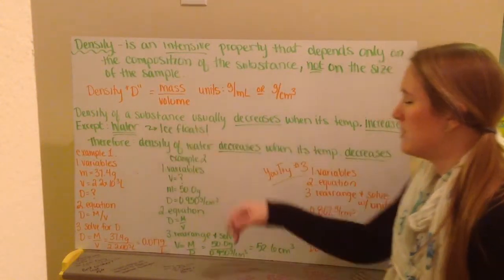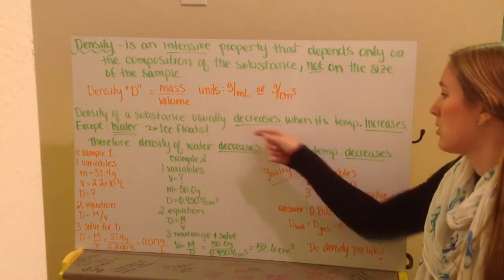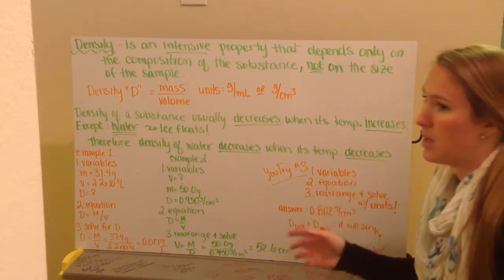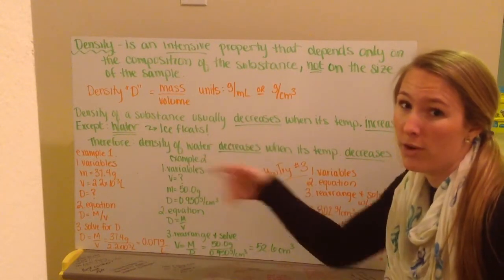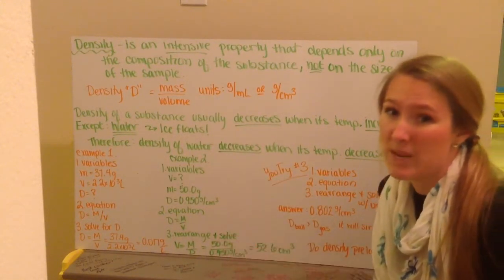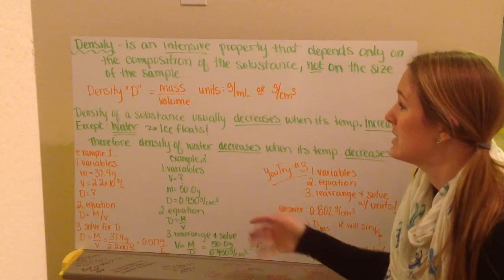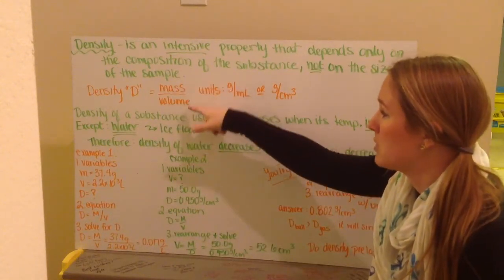The density of a substance is going to usually decrease when its temperature increases. So as something gets warmer, the molecules are going to float farther apart. Therefore, there's going to be more space in between them, therefore less density. There's going to be less mass per unit volume.